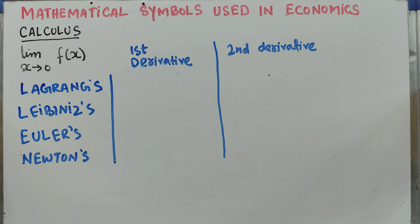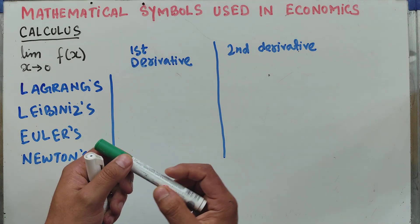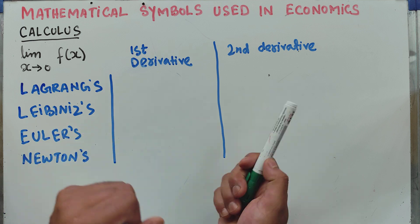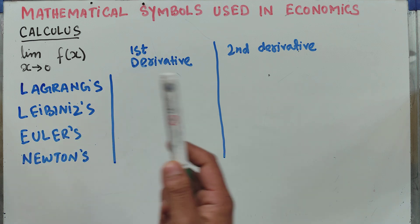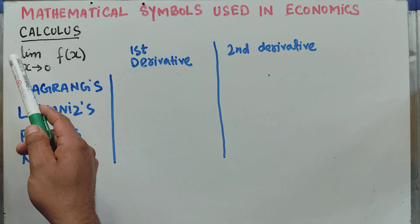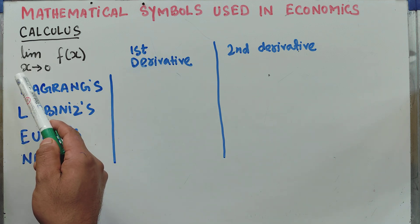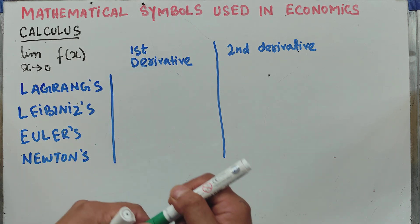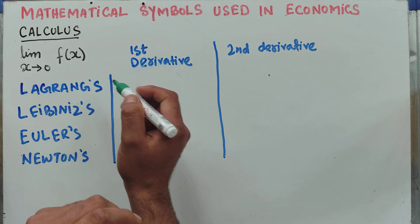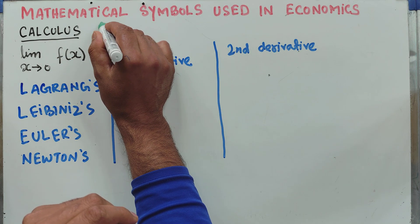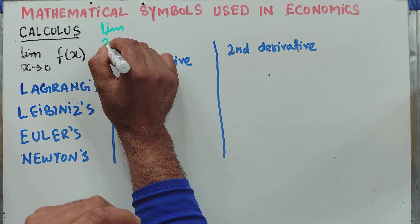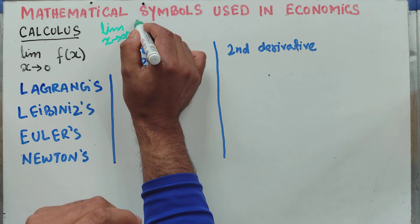In this video we will learn about the different mathematical symbols used in economics. Let's take calculus first. The first symbol is the limit as x tends to 0 of f of x. We also have another symbol: the limit as x tends to infinity of a function f of x.